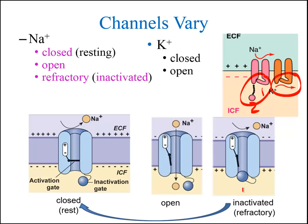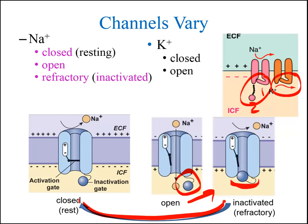Ligand and voltage-gated channels that have refractory states can enter the refractory state through different processes. Voltage-gated channels can enter the refractory state following the open or activated state. For example, as shown here, voltage-gated sodium channel inactivation is due to a blocking particle that swings into the opening of the pore and blocks the flow of sodium ions. No sodium can flow until the channel transitions back to the closed resting state, where the inactivation gate resets to its starting position and the activation gate can respond again to its gating stimulus.